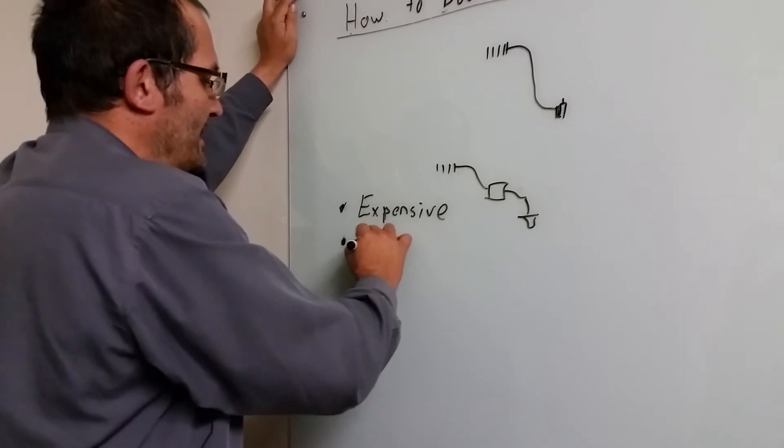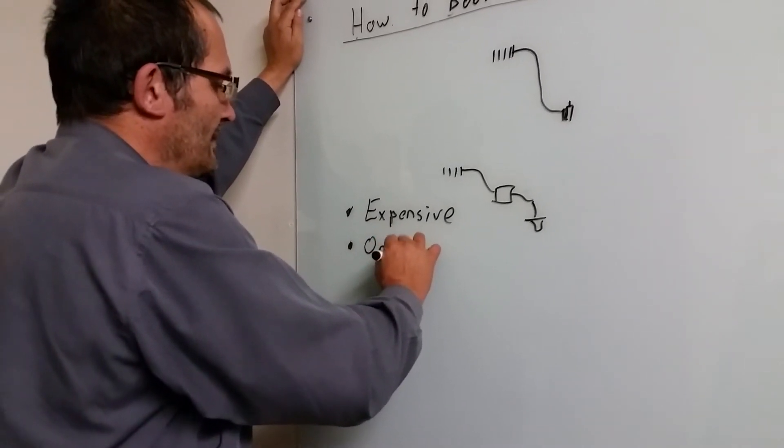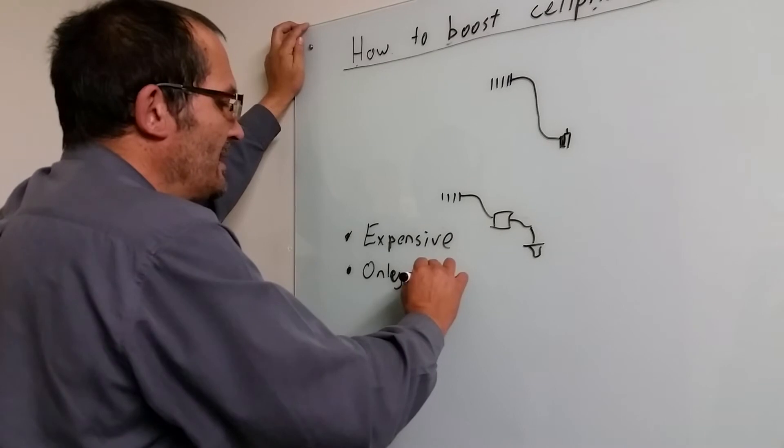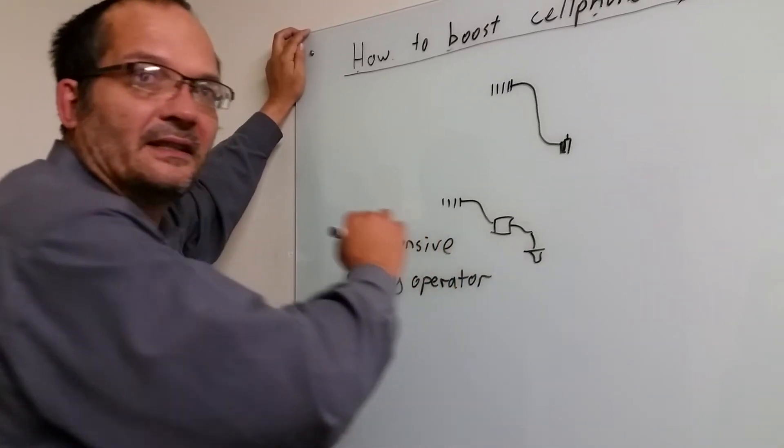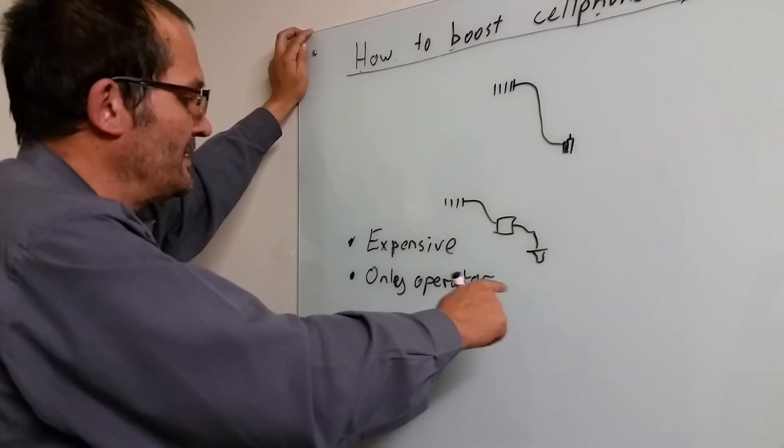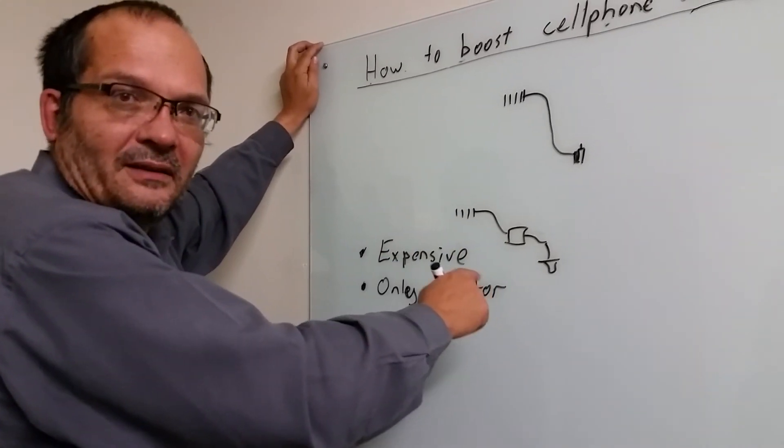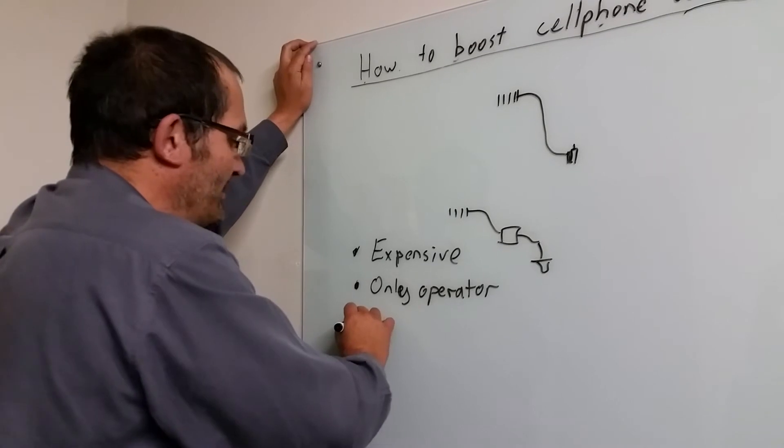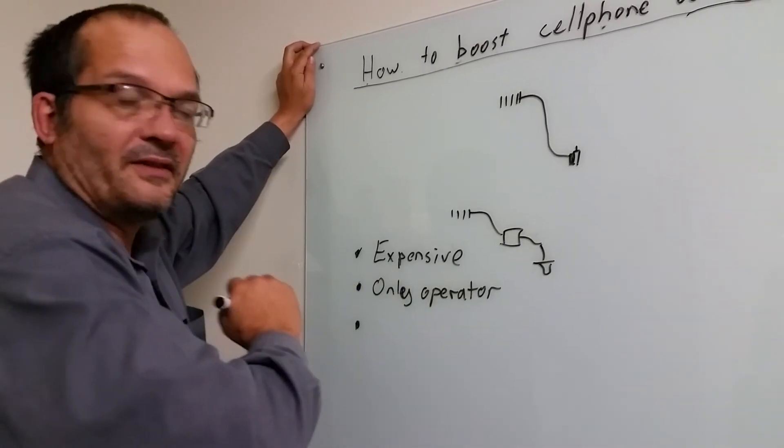Secondly, only the operator can install it. So we are not allowed to sell it legally in South Africa because only the operator can transmit on the down frequency. Because only the operator can transmit on his own license frequency, they have to limit the repeater to their service.